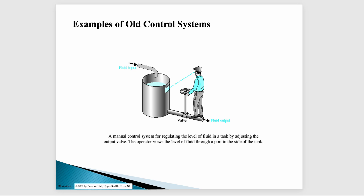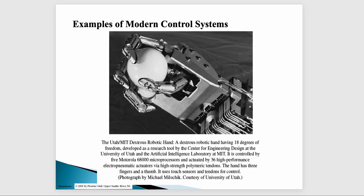An example of the old control system: a human being would manually watch the level of the water tank, and when the desired height or volume was reached, they would switch off the valve. That was the old control system. Nowadays we use the modern control system. An example is the end effector — the arm of a robot which works like a human hand. We give a program to the computer and to the robot, and it works according to the program. That is all about mechatronics and the control system.